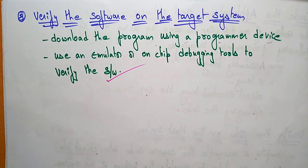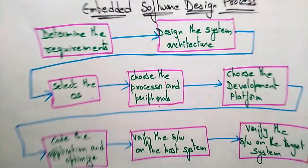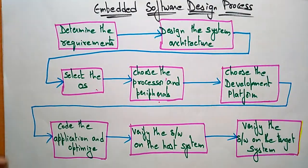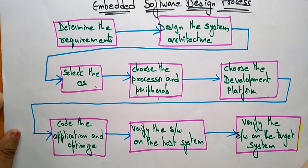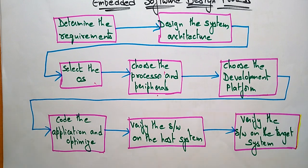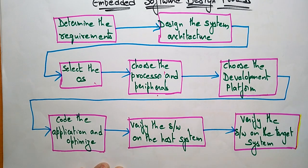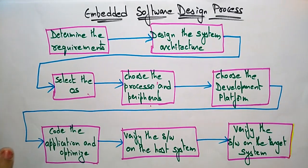To summarize the embedded software design process: first determine the requirements, then design the architecture, select the operating system, choose the processor and peripherals, select the development platform, code the applications, verify on the host system, and finally verify on the target system. Thank you.